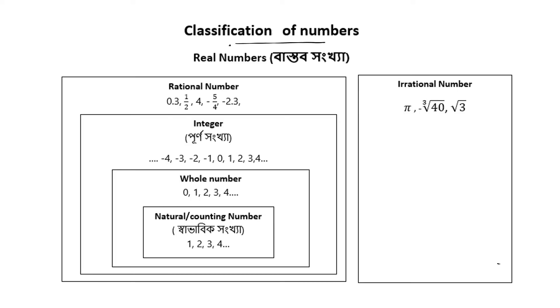Classification of numbers: natural numbers, also called counting numbers, are 1, 2, 3, 4. This is the natural counting number.